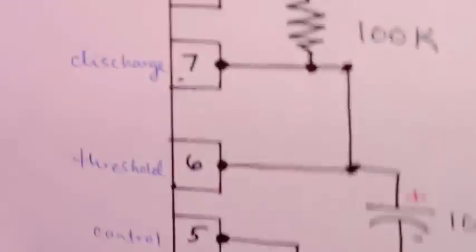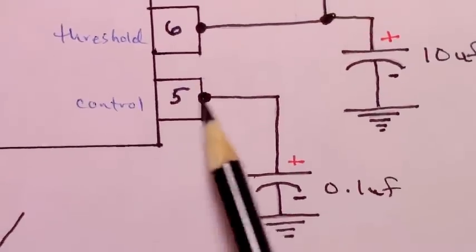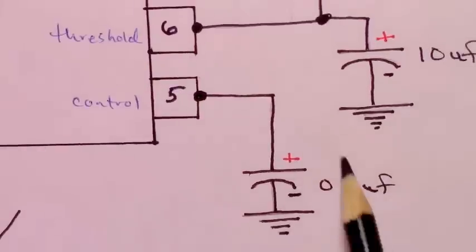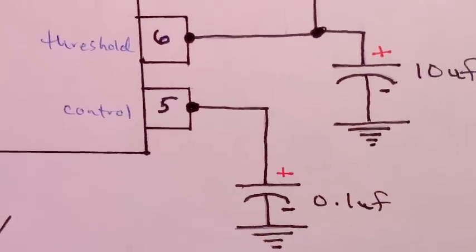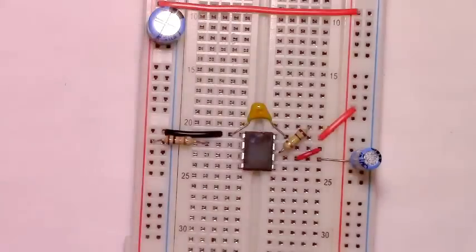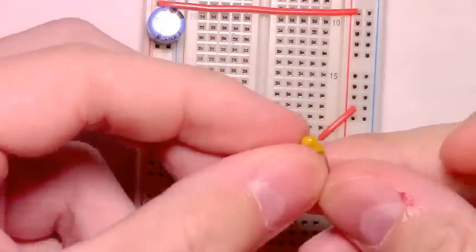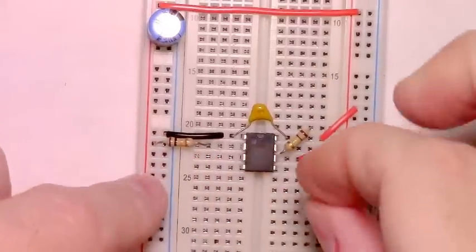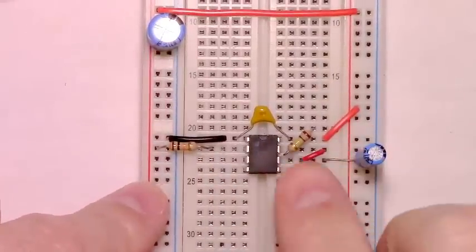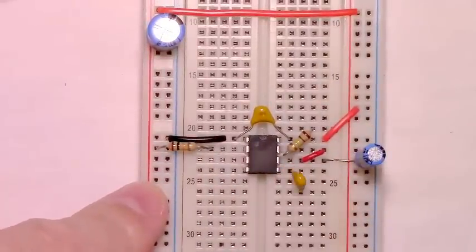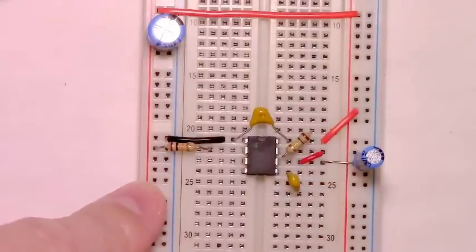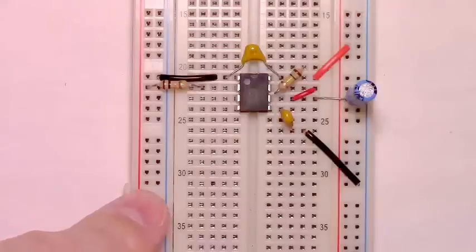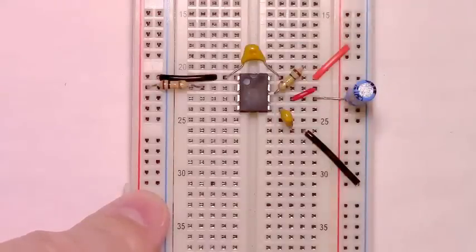And pin 6, the same rail that pin 6 is on should be connected by a 10 microfarad capacitor to ground. Making sure to observe the polarity of that 10 microfarad capacitor. The black line side should be connected to the ground rail. Moving right along, that takes care of the right hand side of our connections.